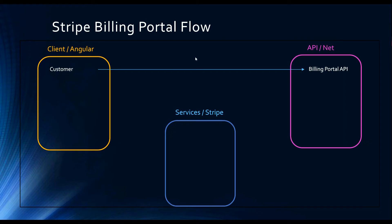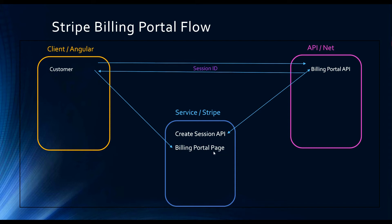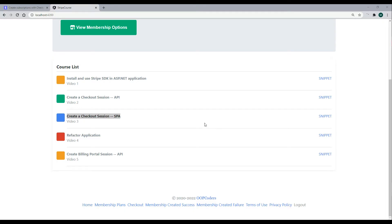Setting up the Stripe billing portal is very similar to setting up the checkout page. We need to call one of our APIs — this API will verify the user and then send back a session ID after talking with Stripe. The Angular application will then redirect the user to the Stripe billing portal page, where they can add or remove a credit card, cancel their membership, or re-subscribe. When they're done, they'll be sent back to the home page.